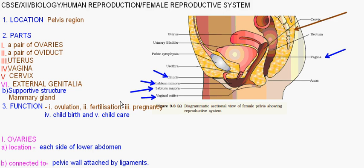The female reproductive system is found in any female human being. A female person can only contain a female reproductive system because human beings are unisexual. So the male reproductive system, or any part of it, will only be found in a male person. Any exception to this is considered an abnormality.